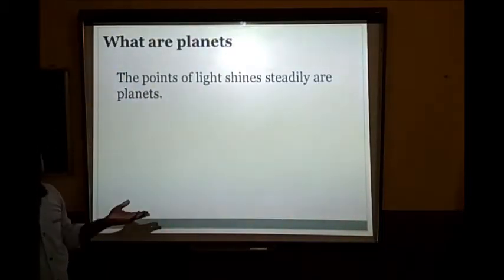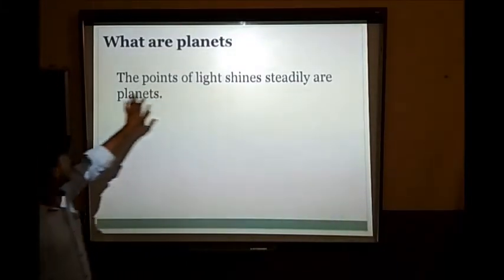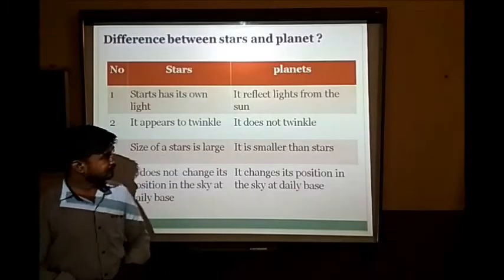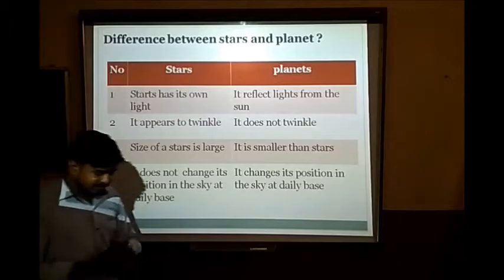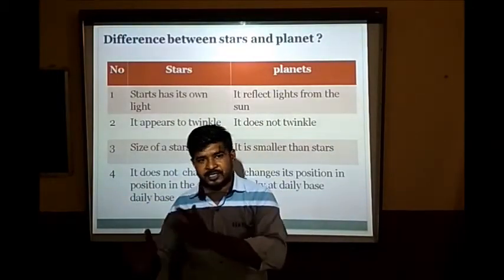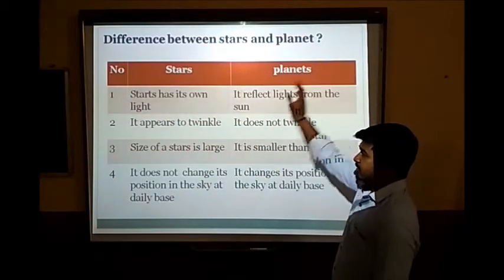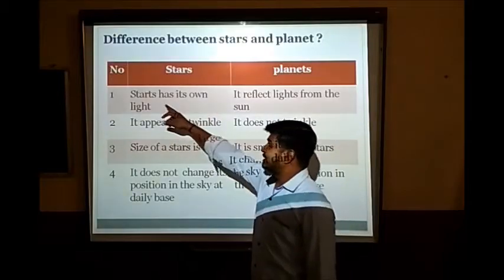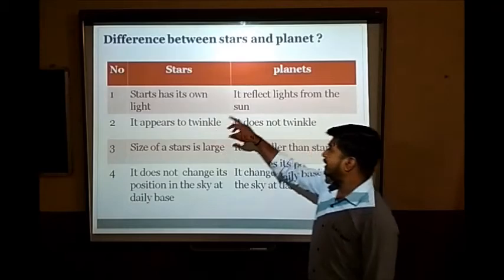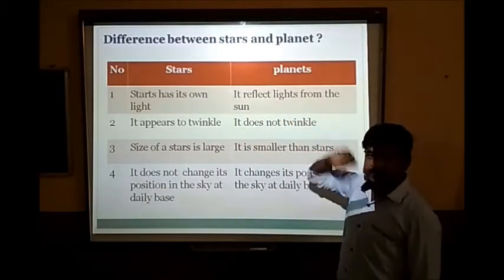What are planets? The points of light that do not twinkle are called planets. Now let's see some differences between stars and planets. Stars have their own light, while planets reflect light from the sun. The sun is a big star. Stars appear to twinkle, but planets do not twinkle.